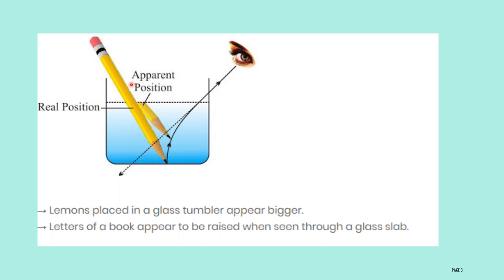The light travels from air to water. There will be a change in speed of light when it enters from air to water, then bending of light takes place — that is nothing but refraction. Due to the presence of refraction, the pencil which is immersed in water will appear bent.